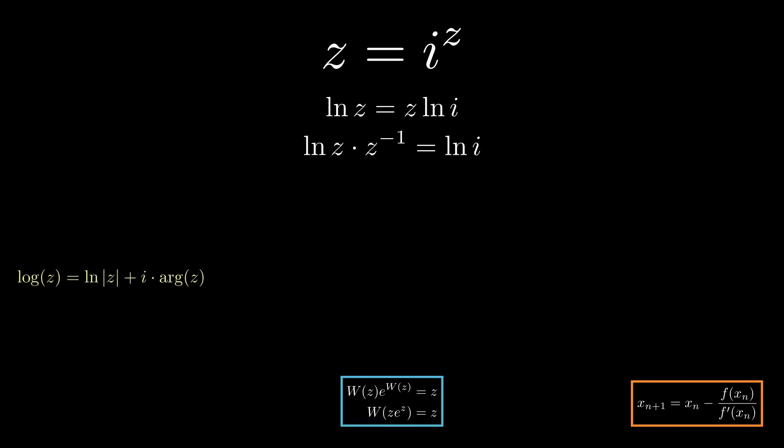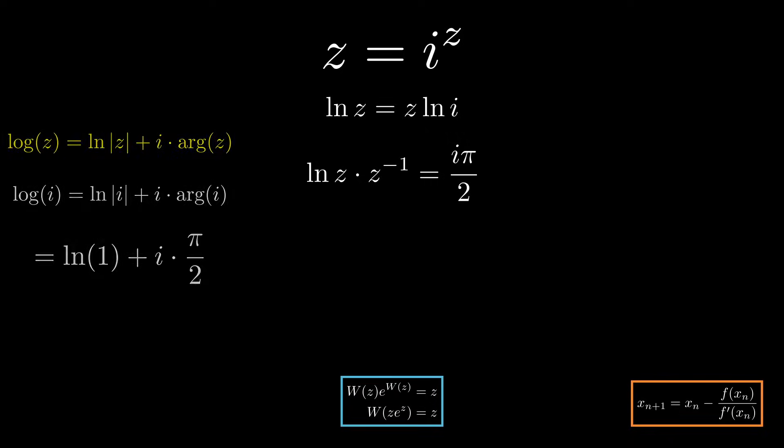The way it works, it's just the absolute value or the modulus of i. That's 1. That goes inside the natural logarithm. Plus i times the argument of i. That's the angle i makes with the x-axis. In this case, pi over 2. Natural log of 1 is still 0. So this is just i times pi over 2. Again, here we're using the principal argument.